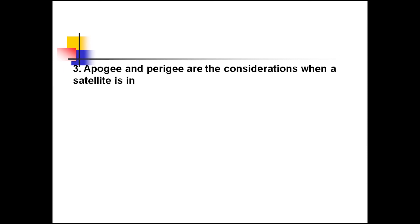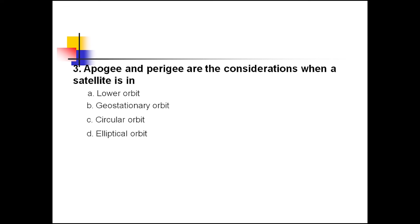Question 3: Apogee and Perigee are the considerations when a satellite is in — option A: lower orbit, option B: geostationary orbit, option C: circular orbit, option D: elliptical orbit. The correct answer is option D — these are considerations when the satellite is in elliptical orbit.